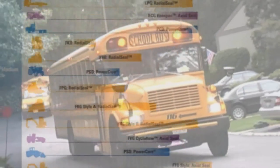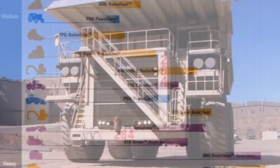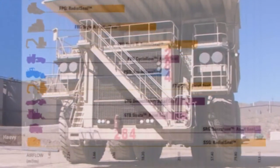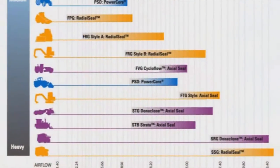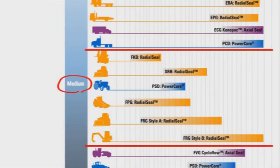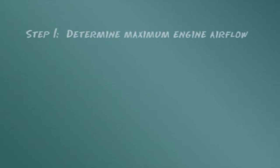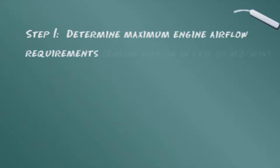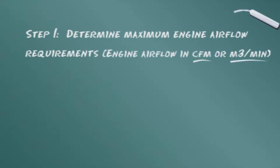Dust conditions vary from on-highway trucks, buses, and boats on the light dust side to heavy-duty earth-moving equipment and mining vehicles on the heavy dust side. Assuming your vehicle operates in a medium dust environment, the first step is to determine maximum engine airflow requirements. This will be specified in CFM, cubic feet per minute, or the metric equivalent, cubic meters per minute.